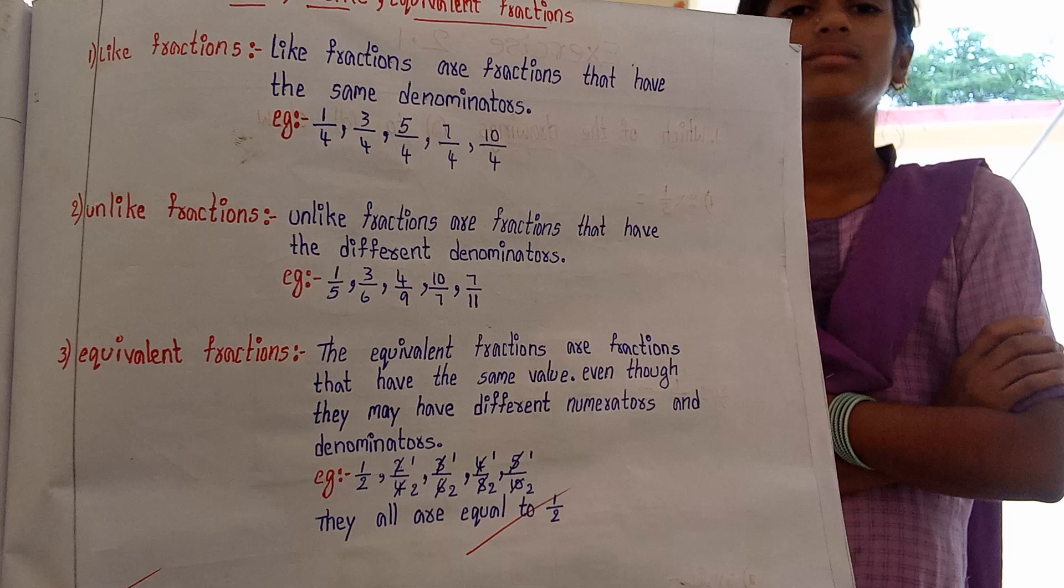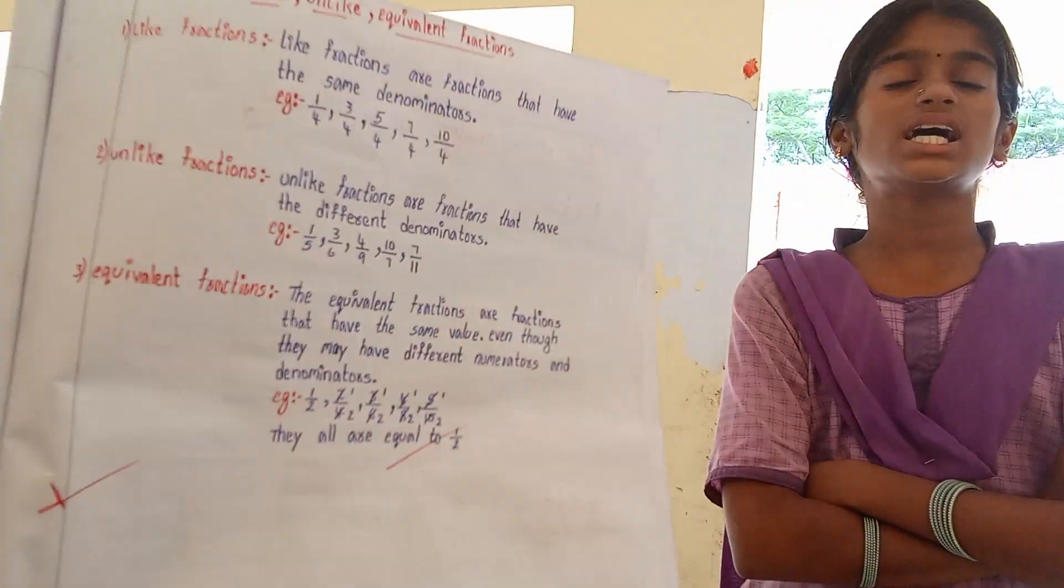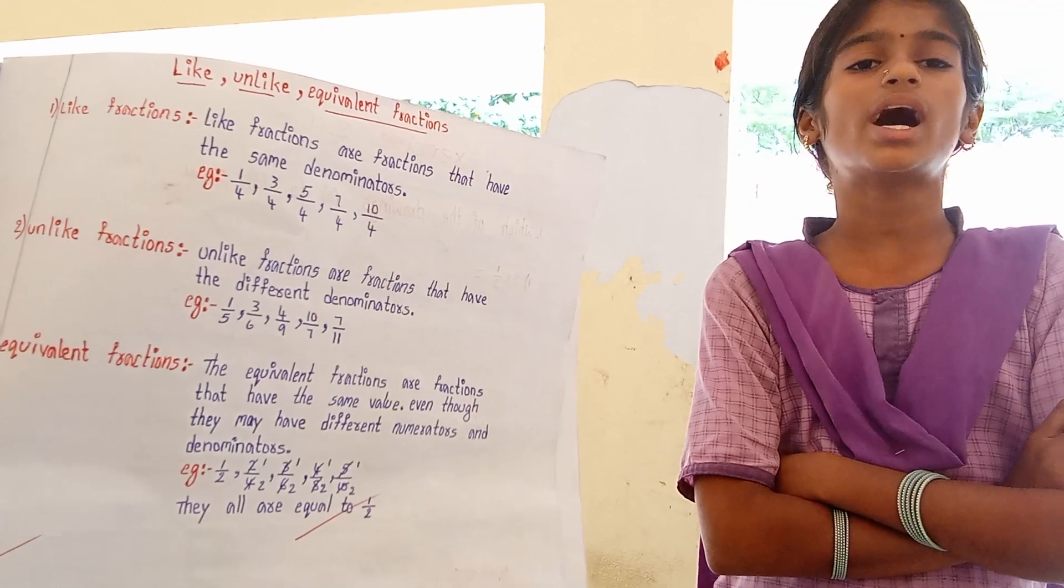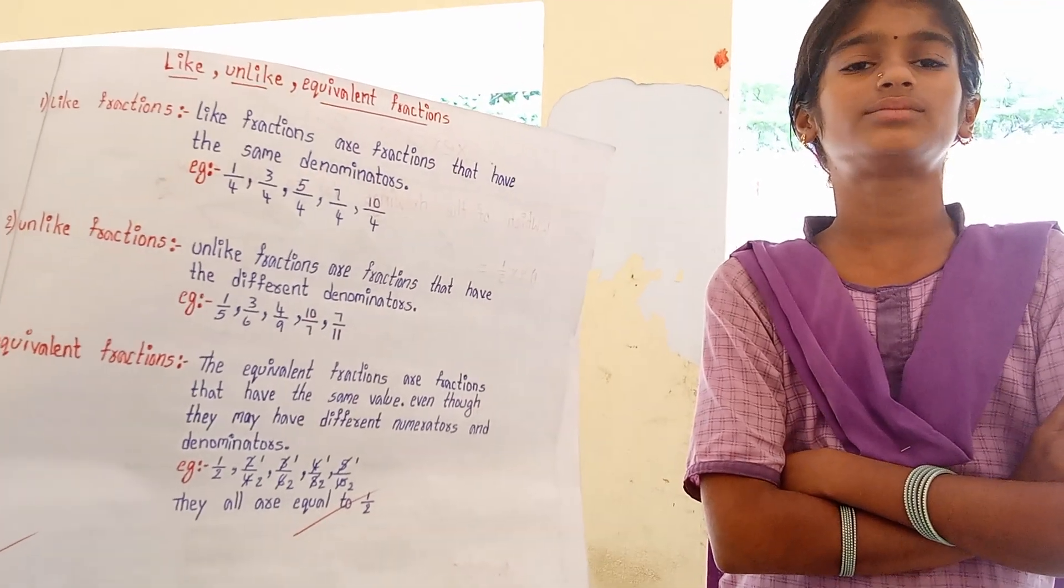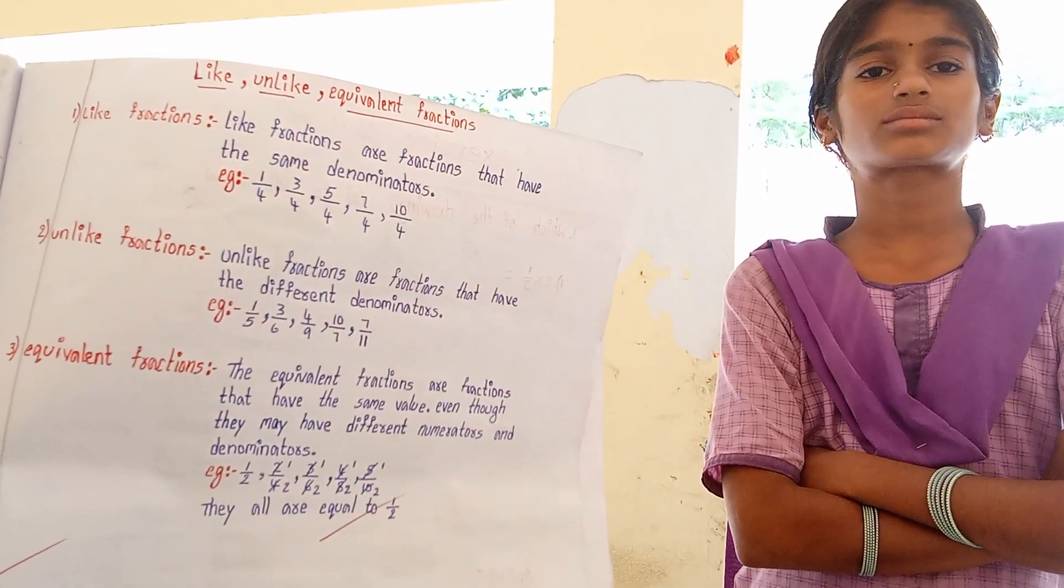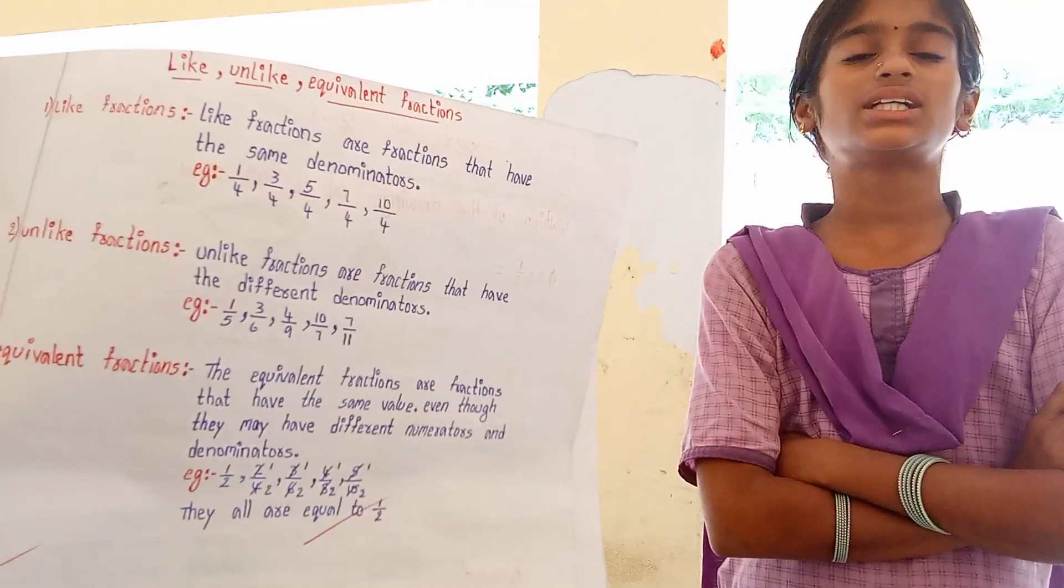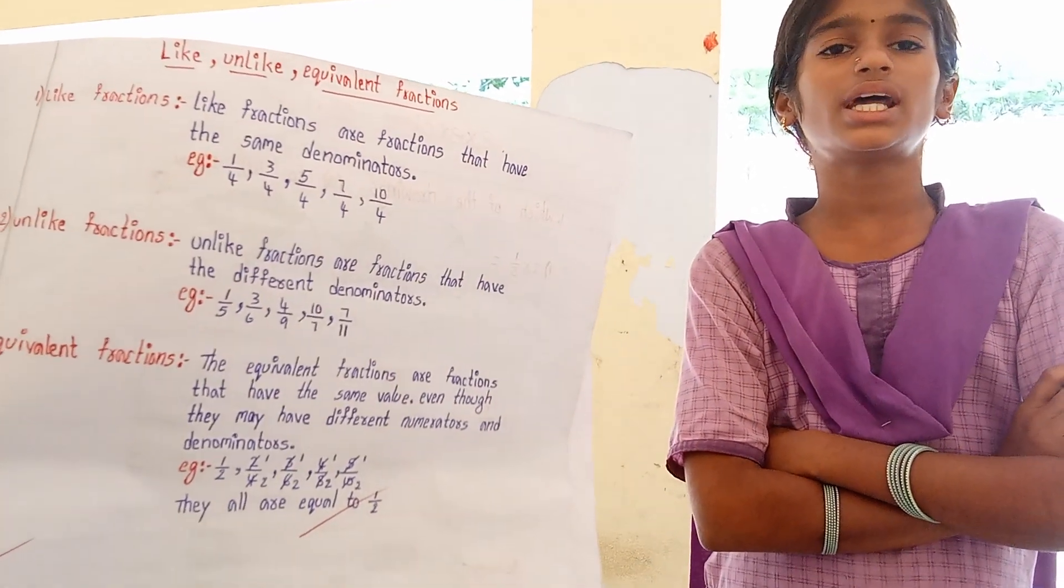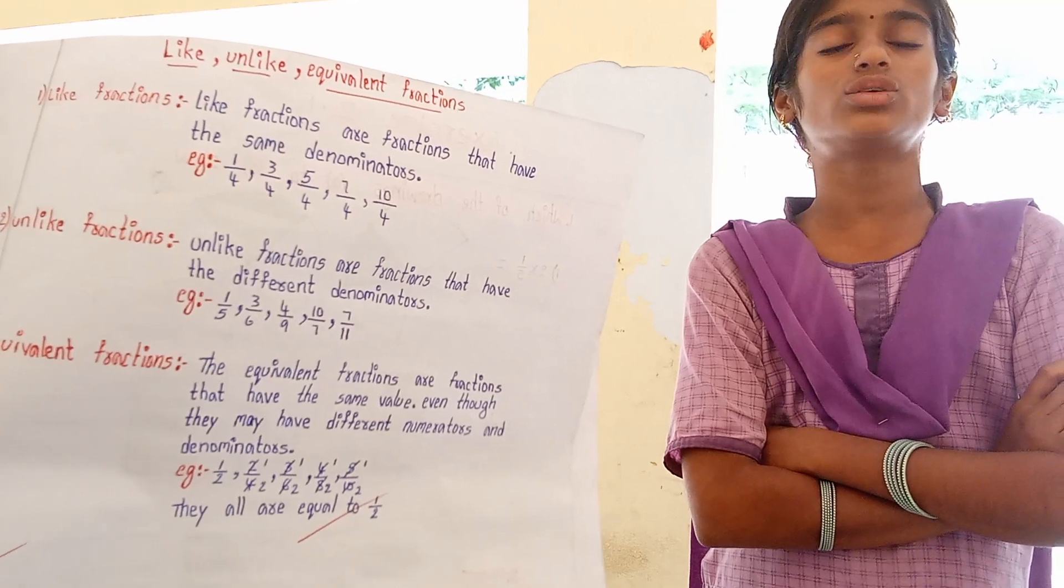Define like fractions. Like fractions are fractions that have the same denominator. Example: 1/2, 2/4. Define unlike fractions. Unlike fractions are fractions that have different denominators. Example: 1/4, 2/7.